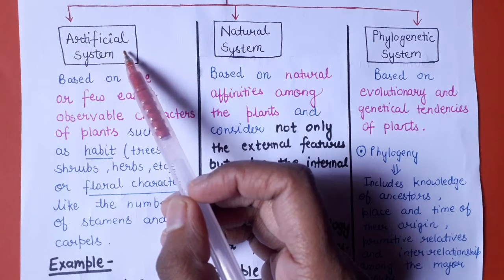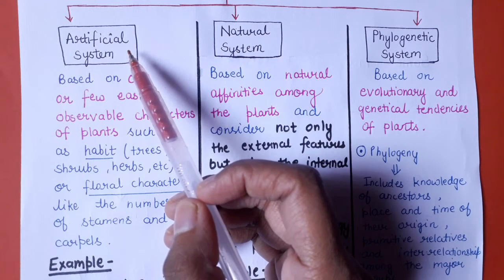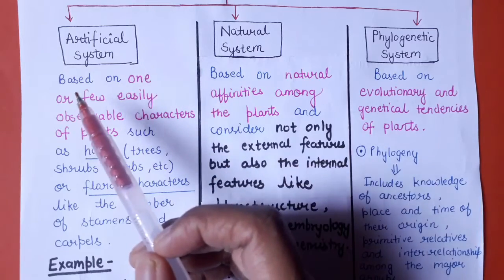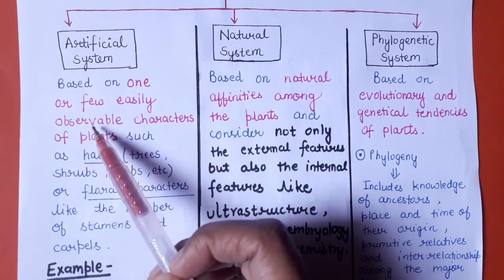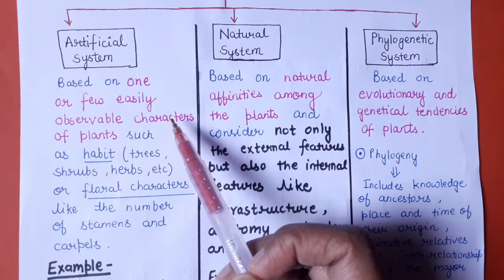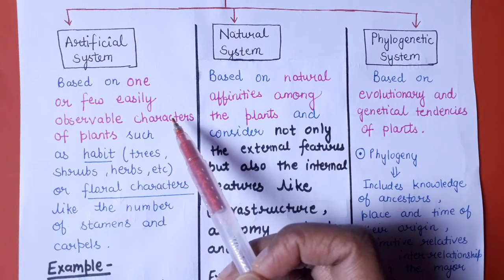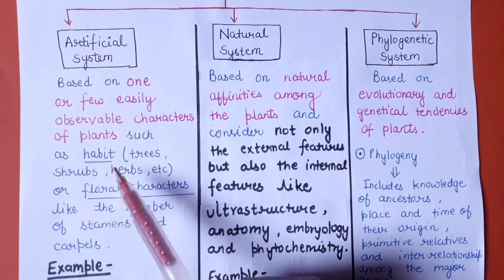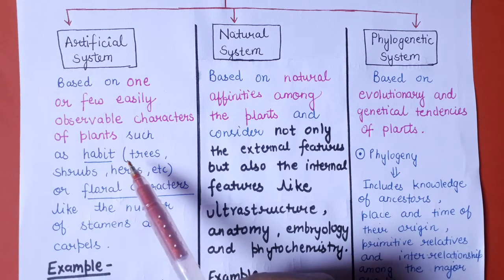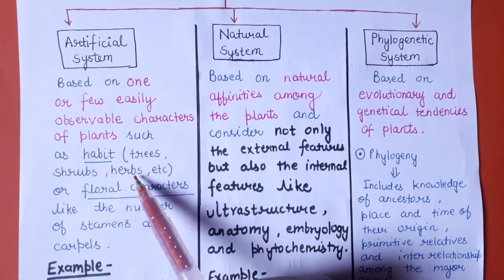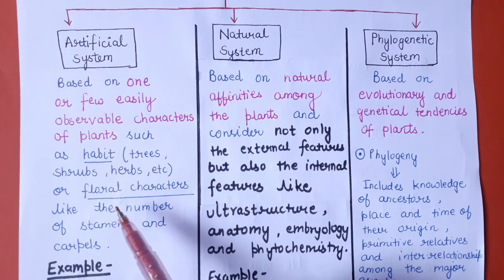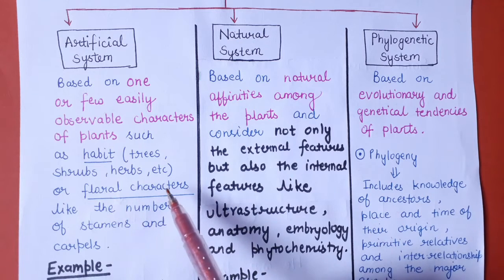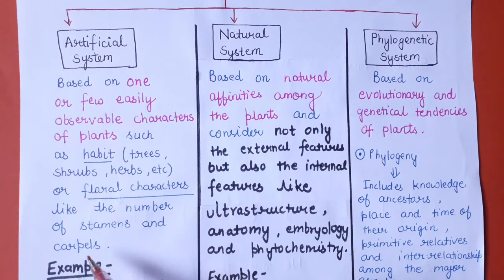Coming to the first system — artificial system of classification. This is one of the earliest systems of classification, which is mainly based on one or few easily observable characteristics. This classification was based on characteristics you can observe easily, like habit. On the basis of habit, you can classify different angiosperms into herbs, shrubs, and trees, or classify plants on the basis of floral characteristics like the number of stamens and carpels.